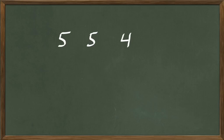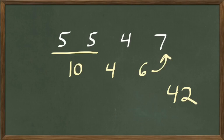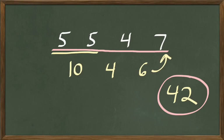Let's do another one. How many are 5 and 5 less 4 multiplied by 7? How many are 5 and 5? That's 10. Now we subtract 4 from 10: 10 less 4 are 6. And 6 multiplied 7 times? 7 times 6 are 42. So 5 and 5 less 4 multiplied by 7 are 42.